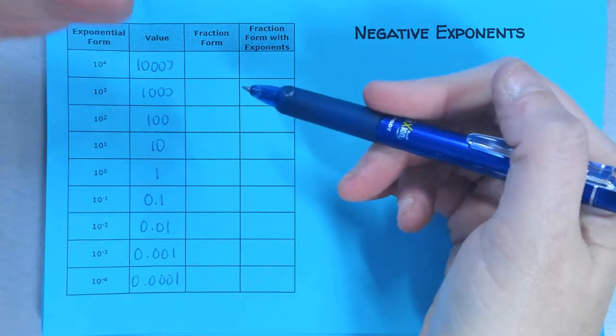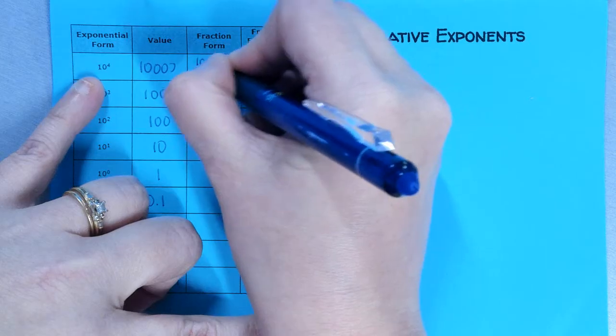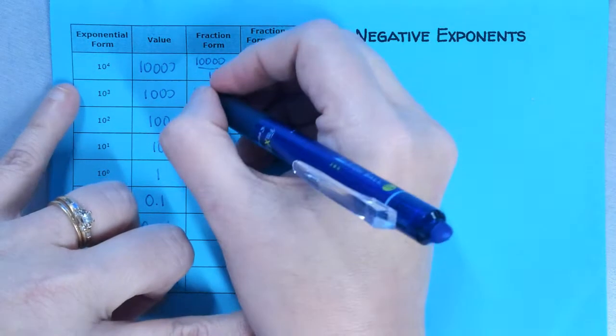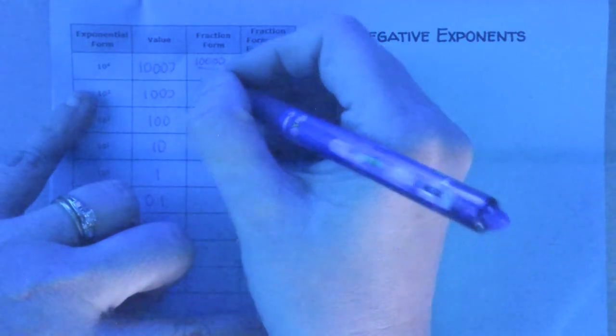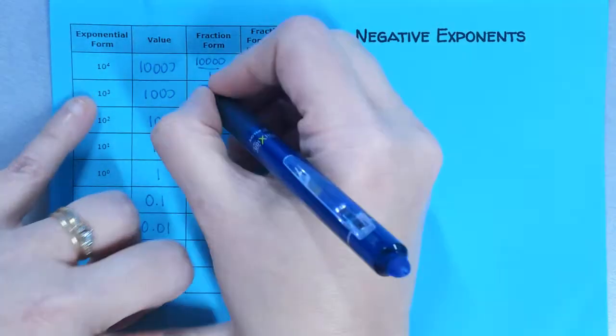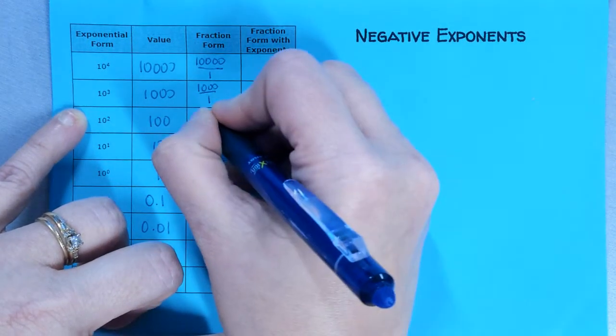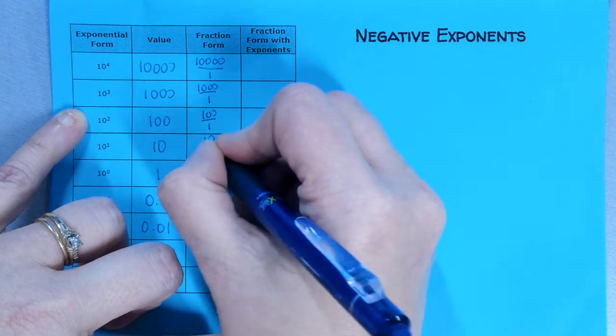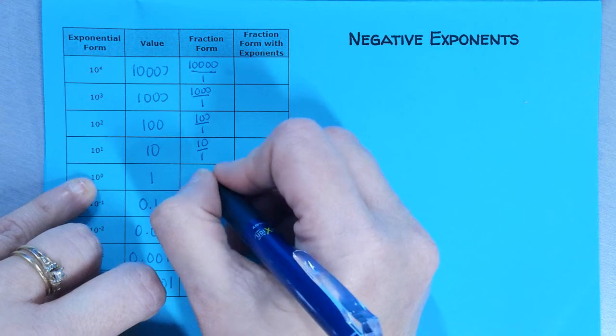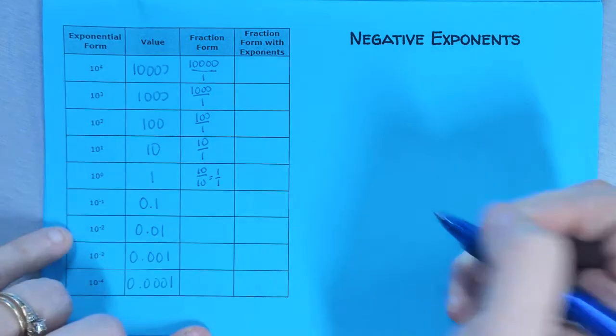This is all to get you to understand why negative exponents work the way they do. I just put these numbers in the calculator, and this is what the calculator spit out. Now, if I write this in fraction form, this is 10,000 divided by 1. 10,000 over 1, because any number over 1 is equal to itself. This one would be 1,000 over 1. This would be 100 over 1. This would be 10 over 1. We could say this is 1 over 1, but we know that we got it by putting 10 over 10, which is 1 over 1.